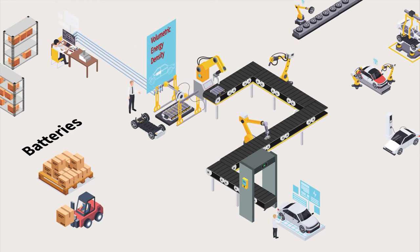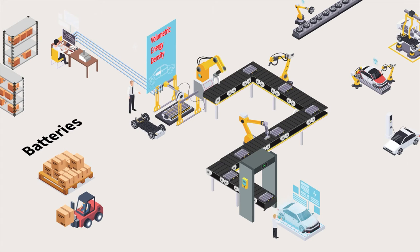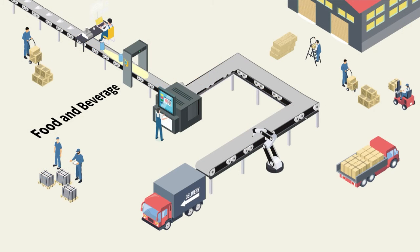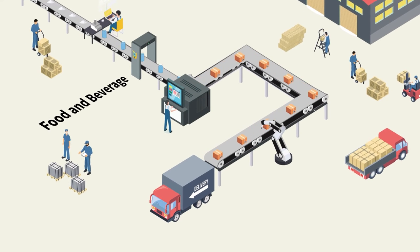For batteries, the tapped density analysis of electrode materials helps battery manufacturers maximize their batteries' energy storage capacity. For food and beverage, tap density decides the amount of settlement, which is useful to optimize the packing size during transit and packaging.